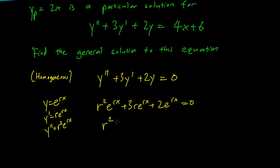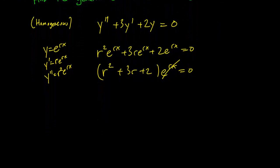So r² plus 3r plus 2 multiplied by e^(rx). This guy is always positive, so we can cancel it out. And this is something that we can use the quadratic formula for.